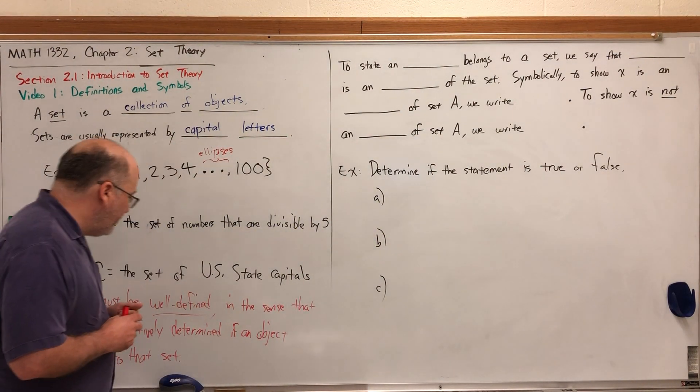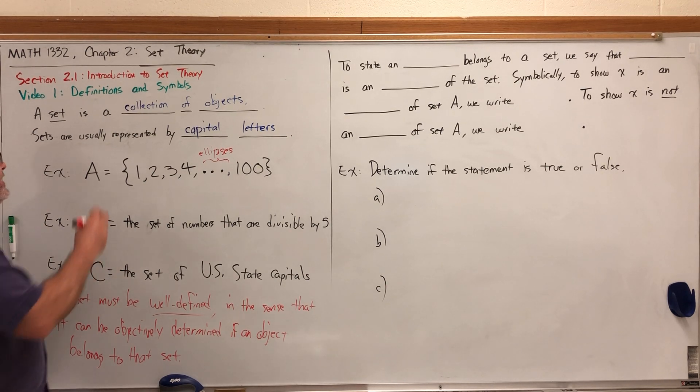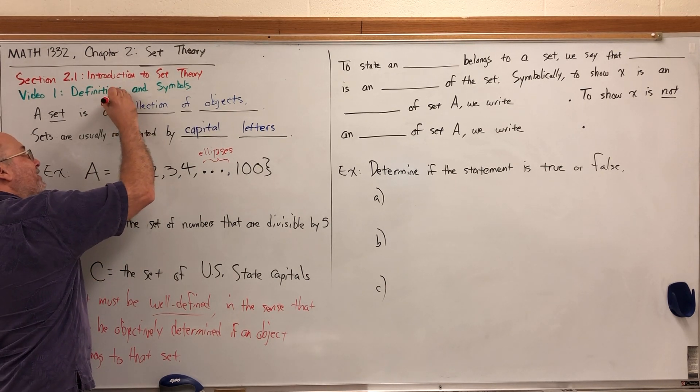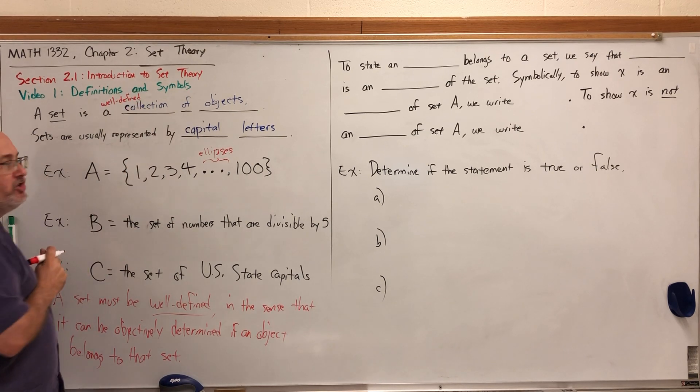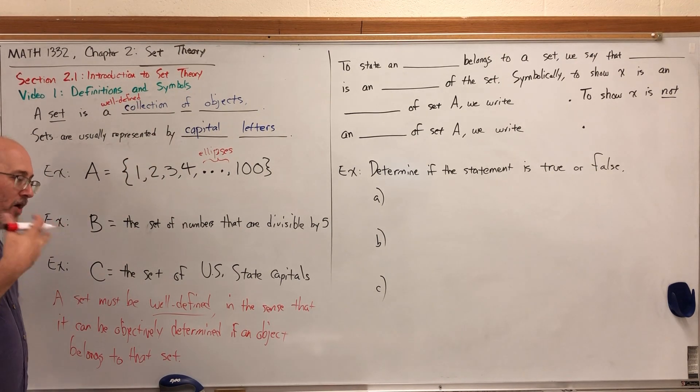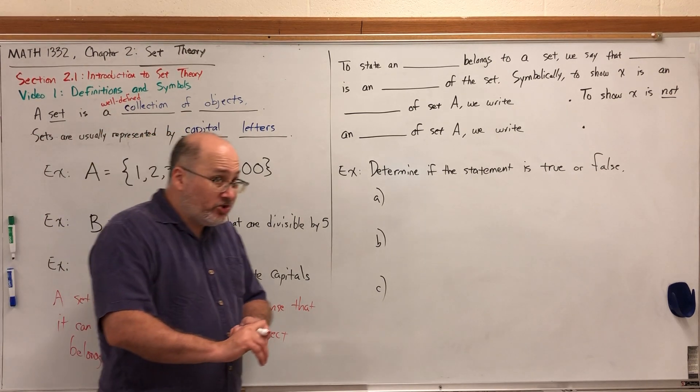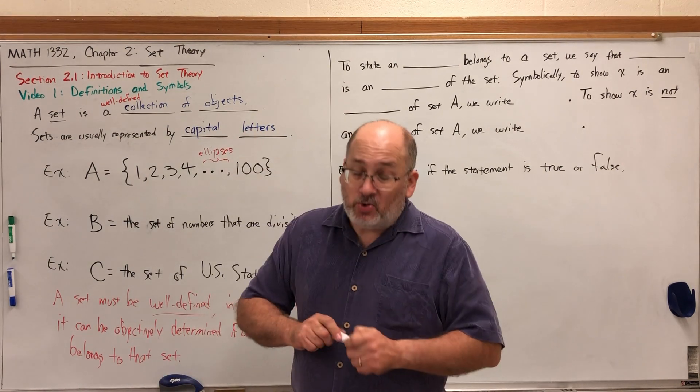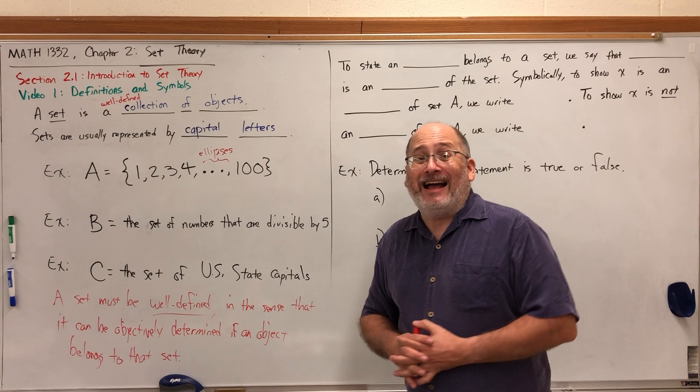All of the sets that we're going to deal with are well-defined, but not all collections of objects are sets. So maybe I should go back to the definition of a set and say that a set is a well-defined collection of objects. Well-defined in the sense that we can objectively determine if an object belongs to a set without having to resort to subjectivity.